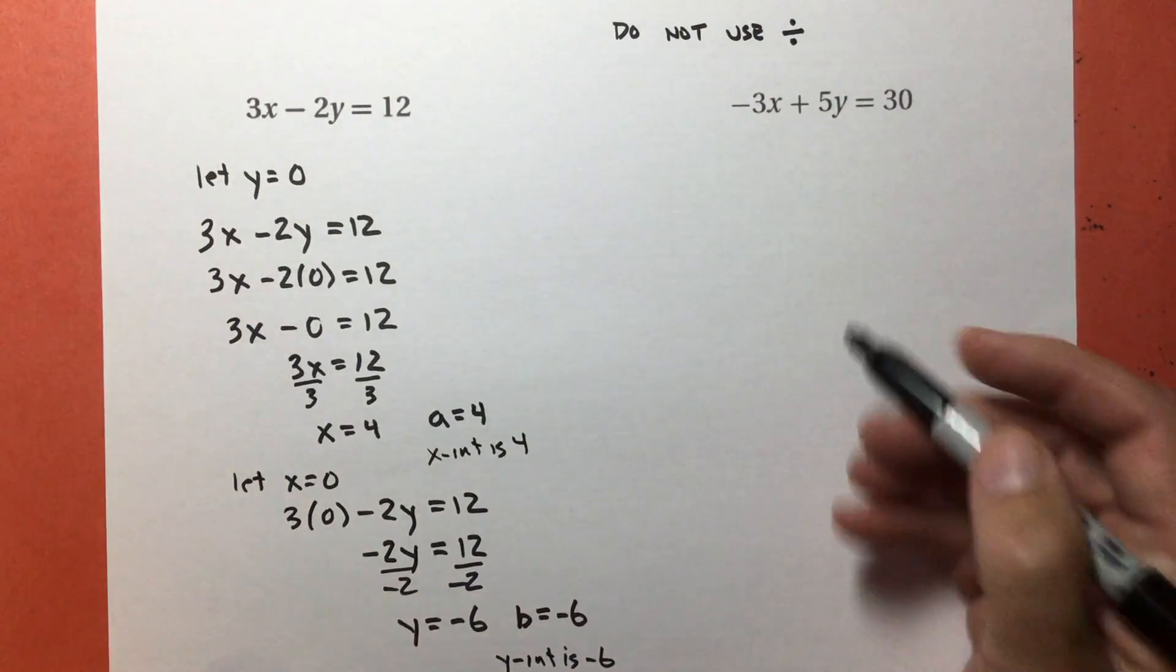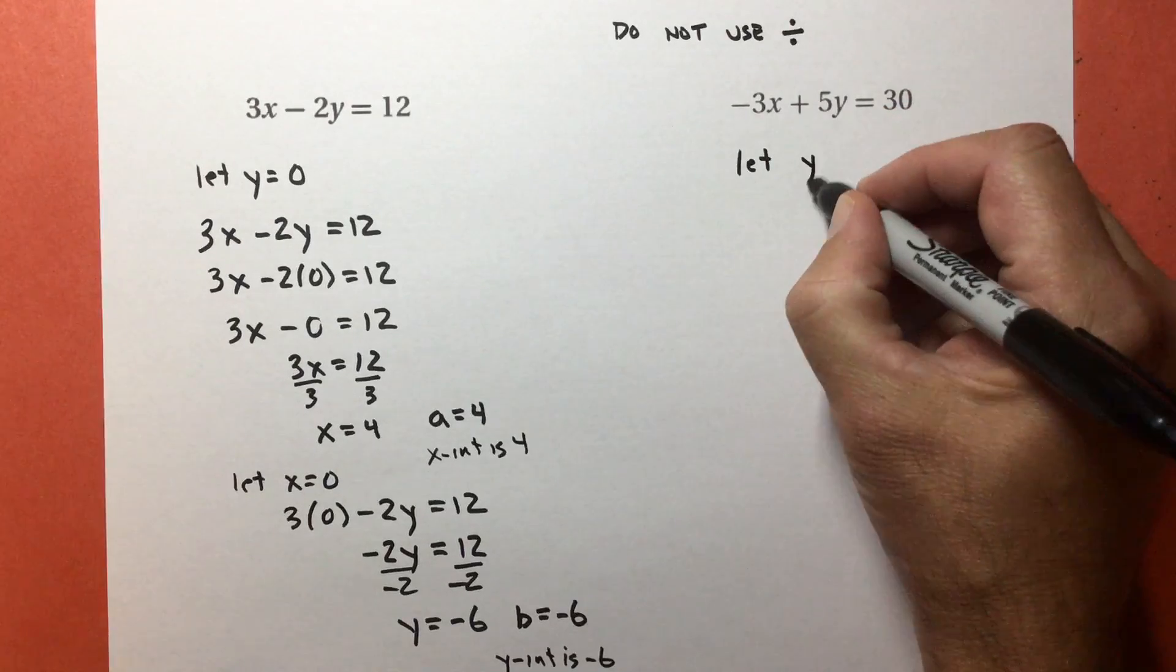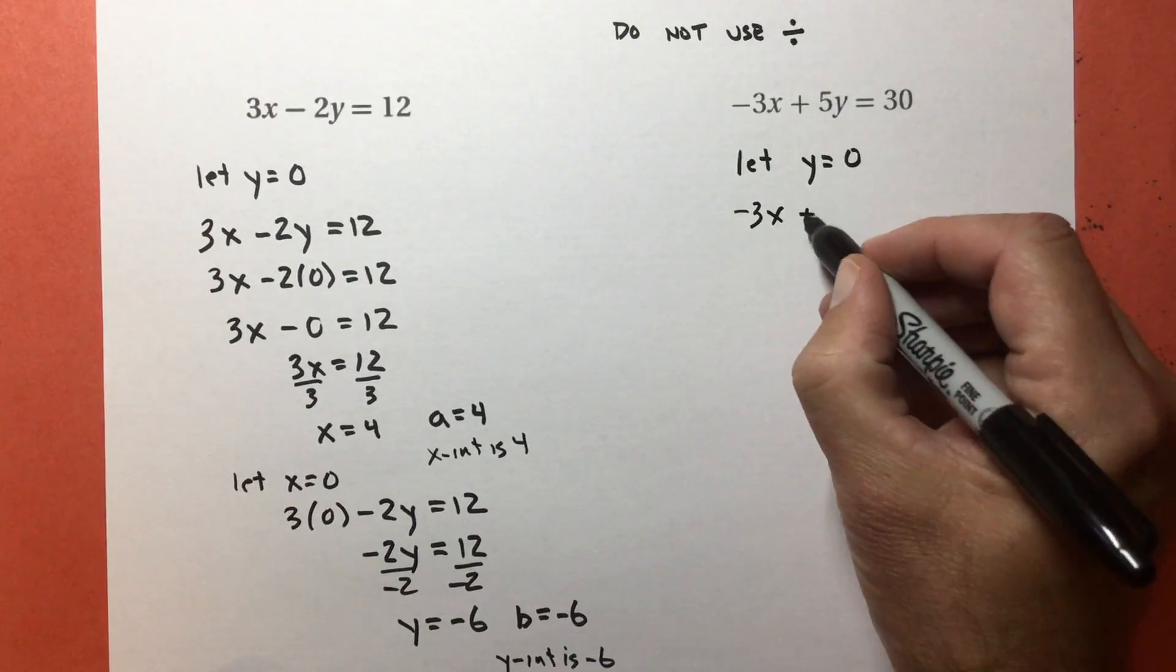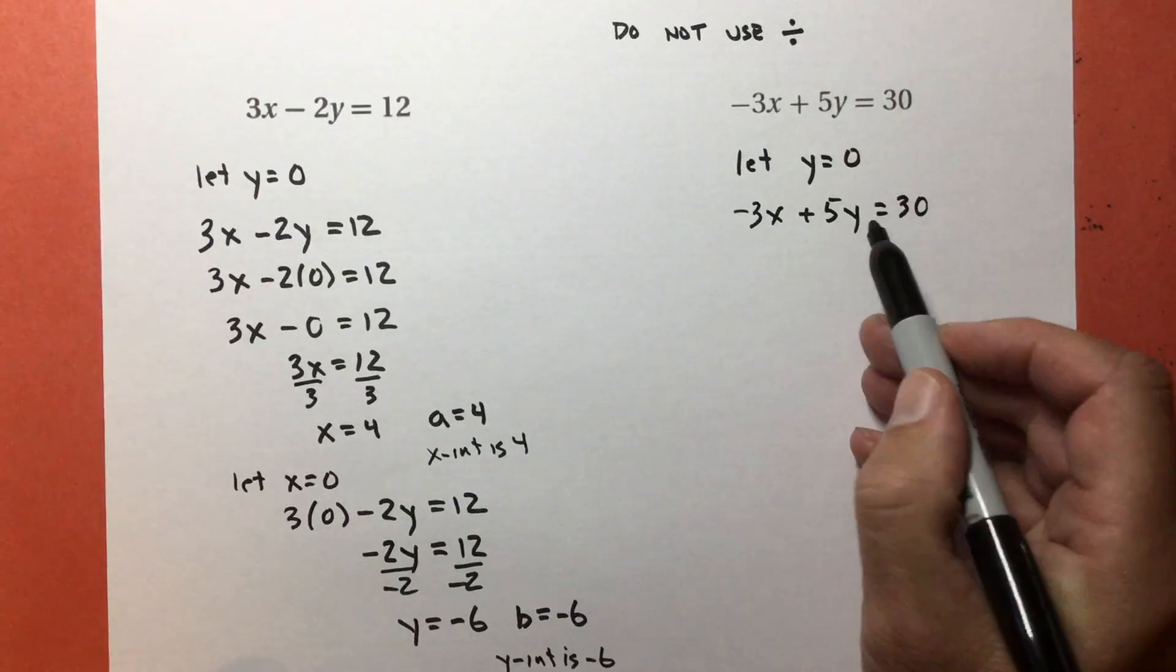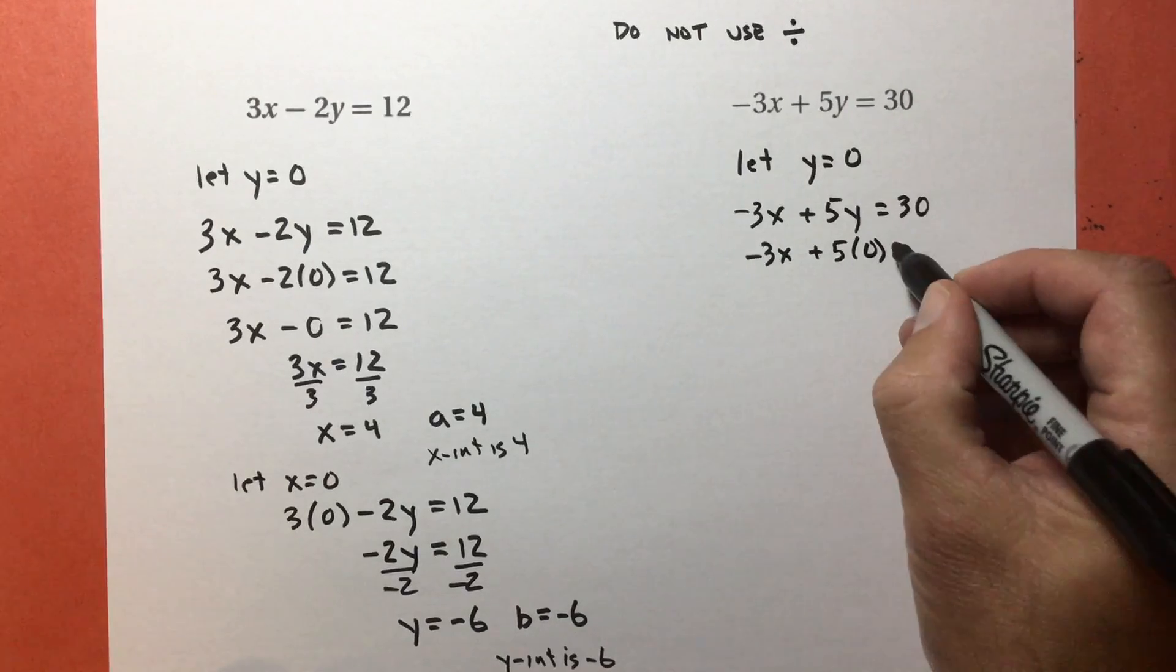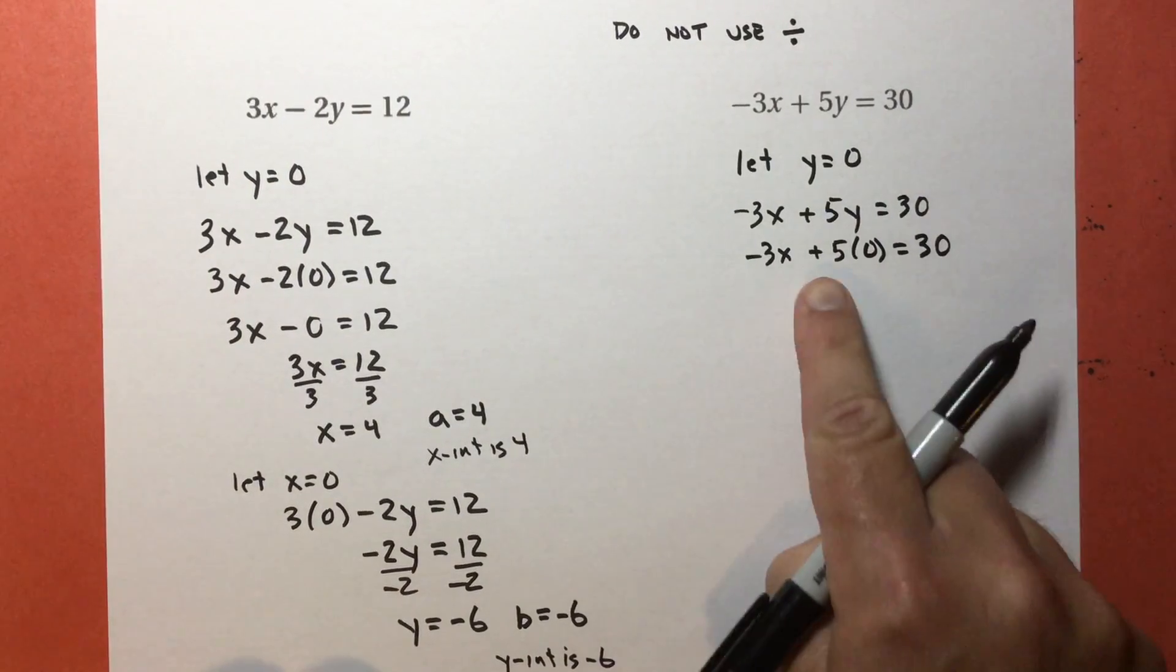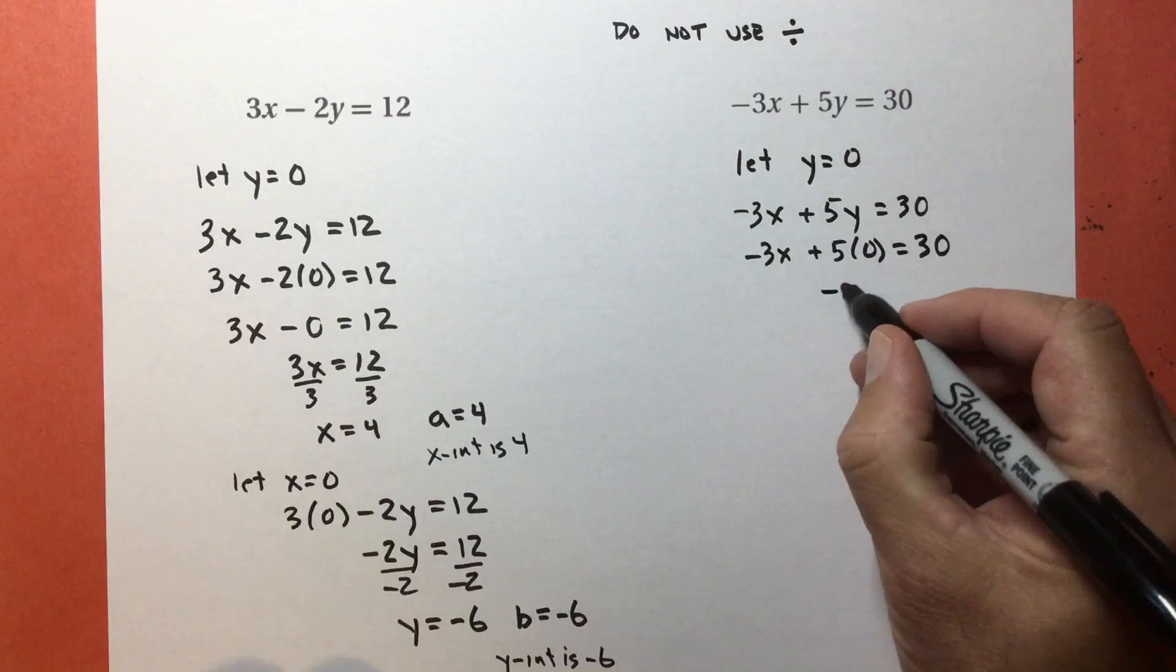Let's do this problem. Same thing as I did over here. I'm going to let y equal 0. So negative 3x plus 5y equals 30. I'm going to replace that y with 0. Negative 3x plus 5 times 0 equals 30. So 5 times 0 is 0. Negative 3x plus 0 is just negative 3x.